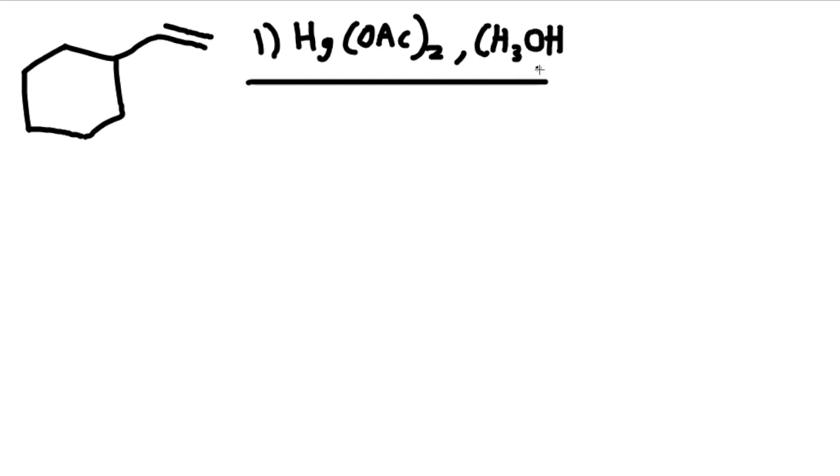Let's try another example. We have an alkene here reacting with our same reactants. Mercury, OAc, two of them, now CH3OH, also reacted with NaBH4. And so we put the OCH3 on the most substituted carbon. This follows Markovnikov, and it will be placed there on the most substituted carbon.